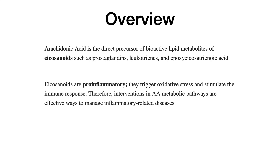As a brief overview, arachidonic acid is a precursor of bioactive lipid metabolites which are known as eicosanoids, and these include things like prostaglandins, leukotrienes, and epoxy eicosatrienoic acid. These eicosanoids are pro-inflammatory, which means when the body is in a state of inflammation, these substances trigger oxidative stress and stimulate the body's natural immune response. Therefore, because eicosanoids are considered pro-inflammatory, you can intervene in the arachidonic acid pathway to treat or manage inflammation.